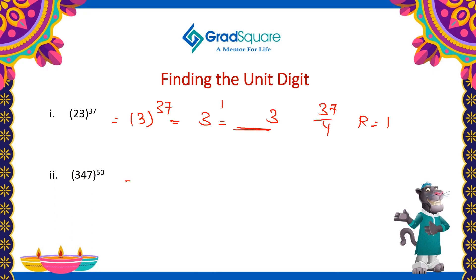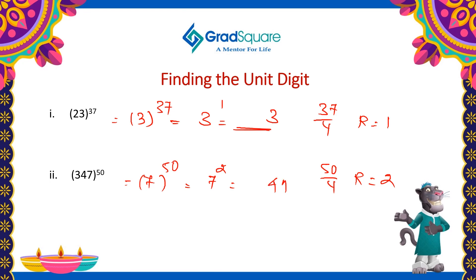In this example, 7 is raised to the power 15. Again, the cyclicity of 7 is 4. When 50 is divided by 4, the remainder will be 2, which is equal to 7 squared. 7 squared is nothing but 49. So the unit digit of the resultant will be 9.